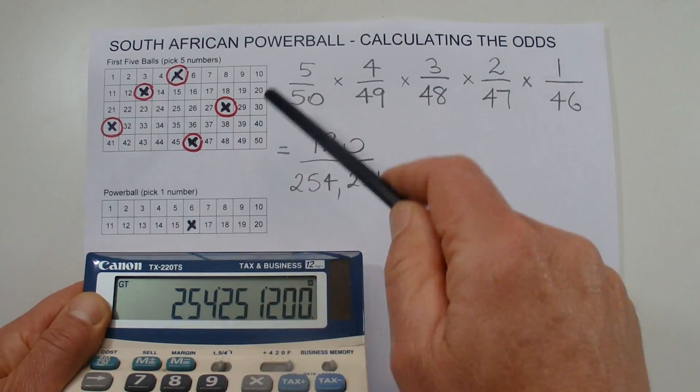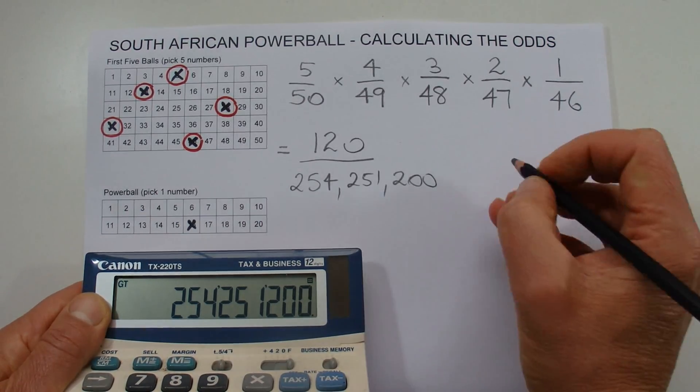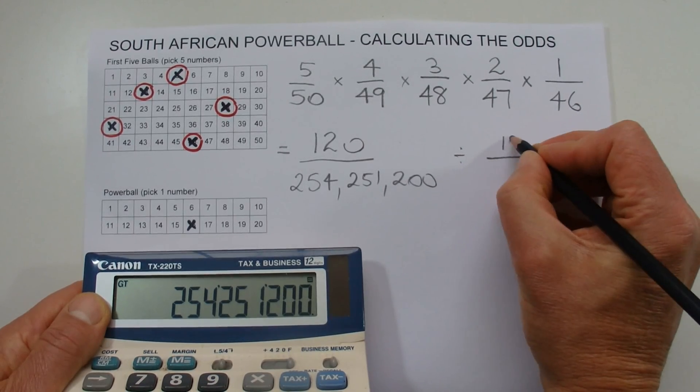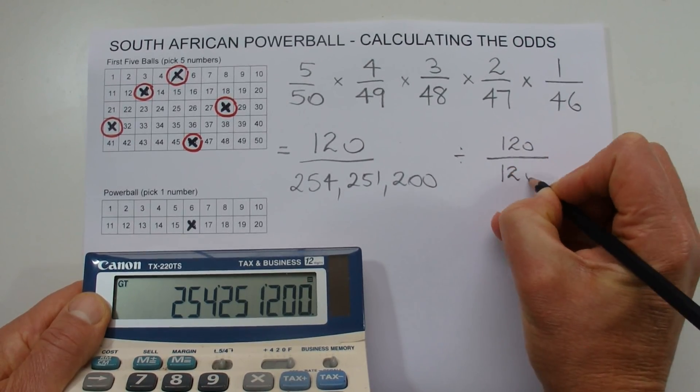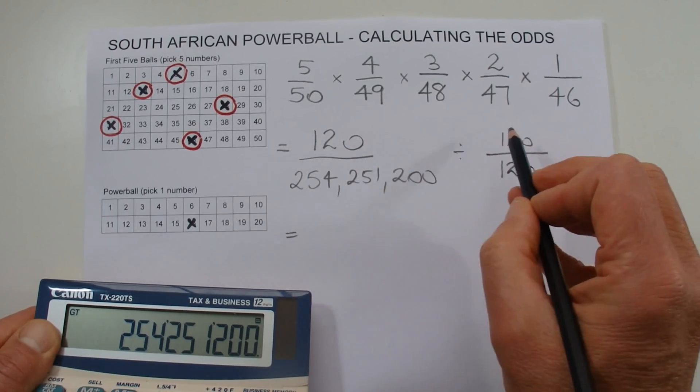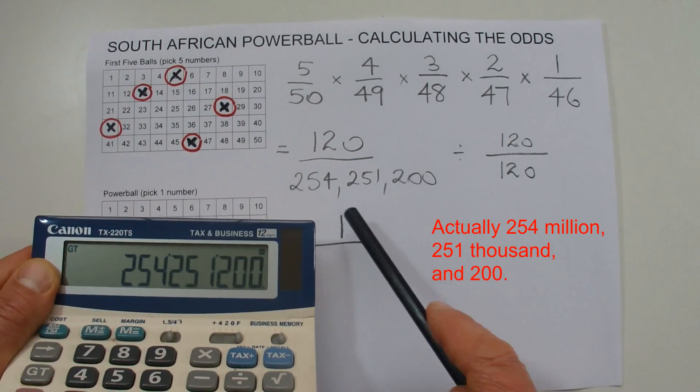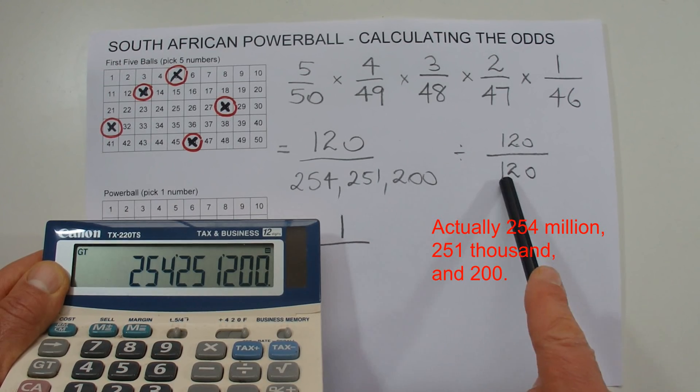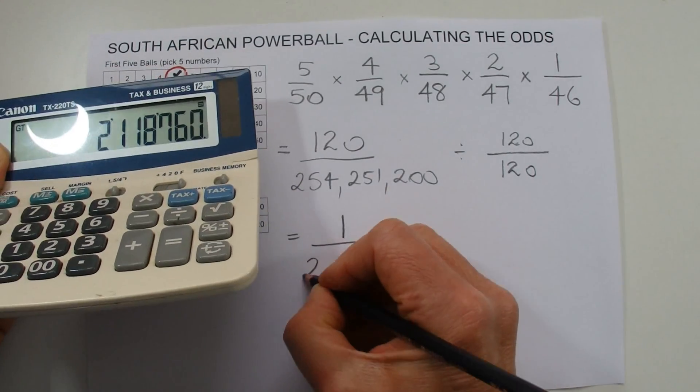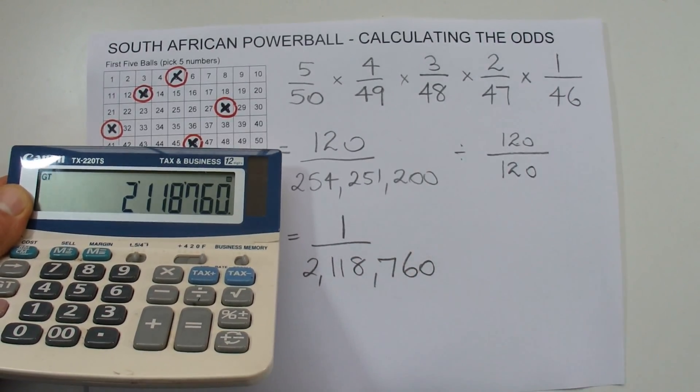So I'll write that: 254,251,200. That means that matching those first five numbers, you've got 120 chances in 254 million. And we'll simplify that fraction by dividing the top and the bottom by 120. 120 divided by 120 equals one. And then 254,251,200 divided by 120 equals 2,118,760.